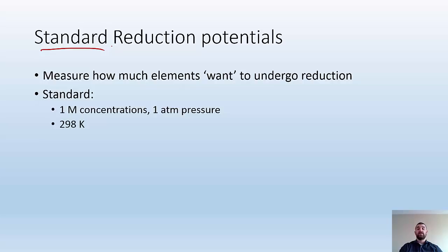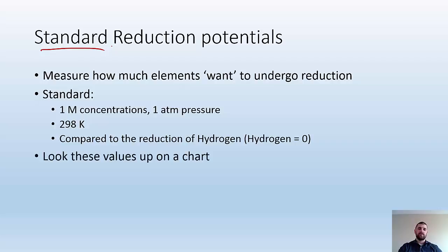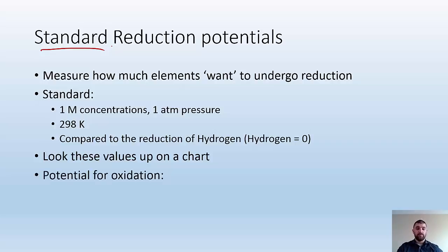It's also telling us that it's at 298 Kelvin, and they're all going to be compared to the reduction of hydrogen. We set hydrogen's reduction potential to zero volts. You can look these values up on a chart — they're going to be on a table, given to you. You're not going to figure out the standard reduction potentials; these are things you look up.